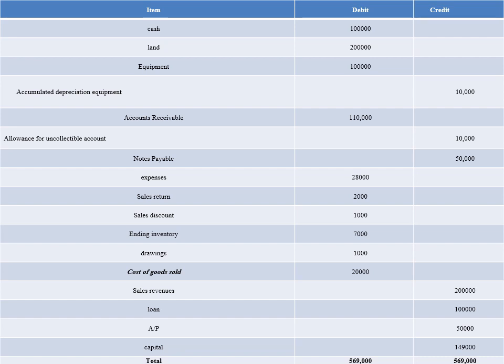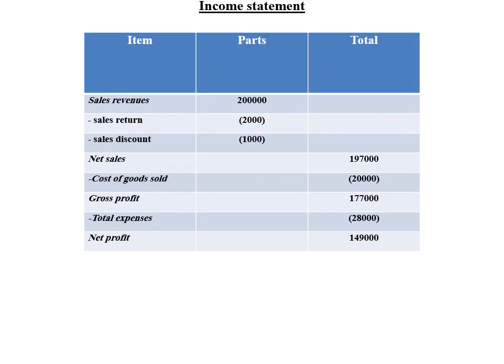For the income statement, you need to start with sales revenues. For a merchandiser, the most important source of revenue is from selling the goods. You start with sales revenue and subtract all the sales returns and sales discounts that happen during the accounting period — all given in the adjusted trial balance. In accounting, we use brackets for subtraction, which is why 2000 is put between brackets. So, sales revenue minus sales returns minus sales discounts gives you net sales.